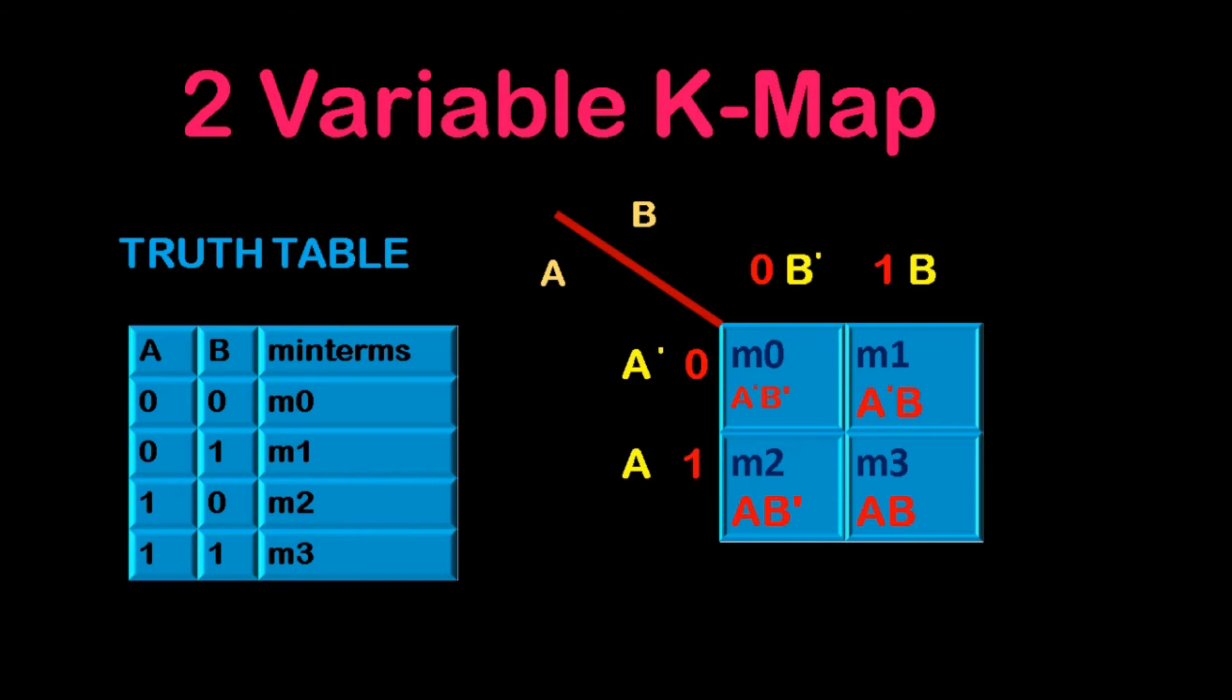As we discussed, as per the gray code, each box should differ at least by 1 bit. And in the vertical ones are assigned as B dash and B. So first value is taken as B dash, that is 0 and then 1. And if you see in the first cell, the combination will be 0,0. 0,0 is M0, minterm M0, which will have the value like A dash B dash. The second box is M1, which is having a value 0,1, which is nothing but A dash B. Next box is M2, AB dash. And M3 is AB, which is 1,1 value in the truth table.